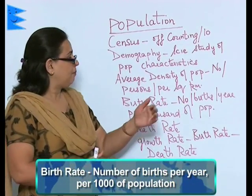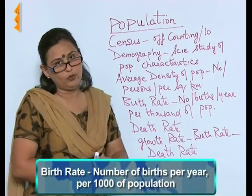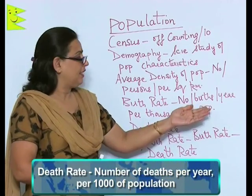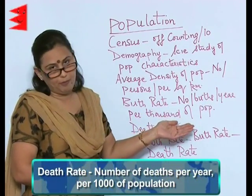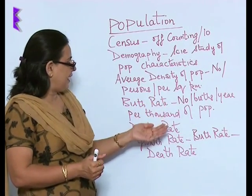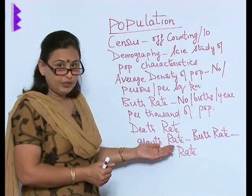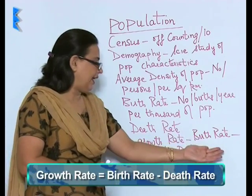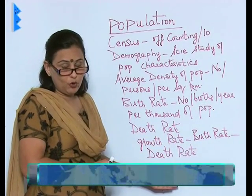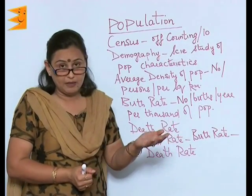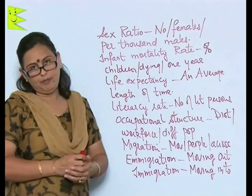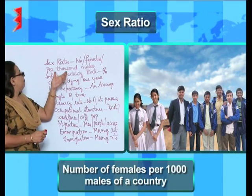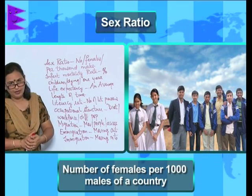Birth rate is the number of births per year per thousand of population. Death rate is the number of deaths in a year per thousand of population. When you know the birth rate and the death rate, you can easily find out the growth rate, because growth rate equals birth rate minus death rate. These are the terms which you must know. Next is sex ratio — it is the number of females per thousand males in a country.